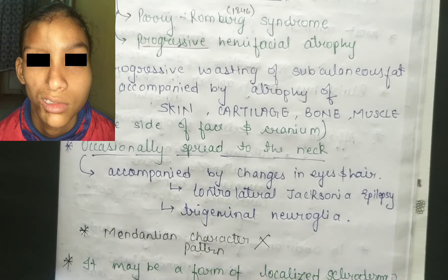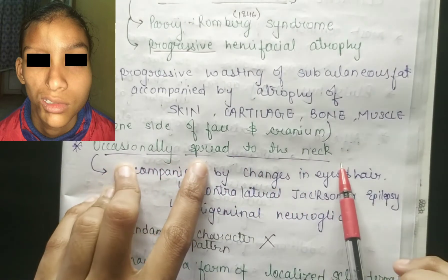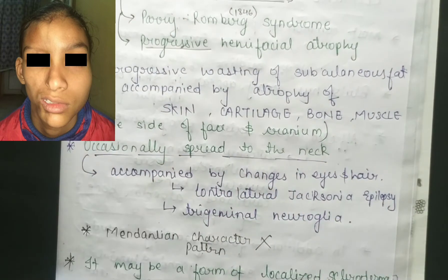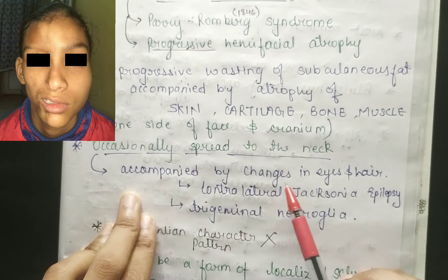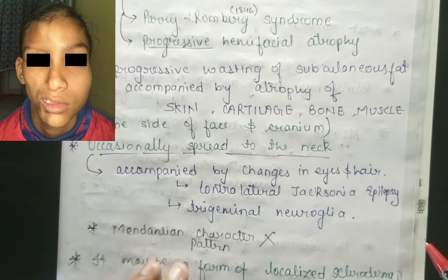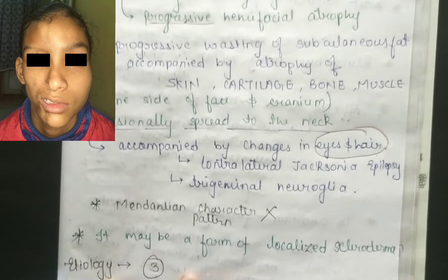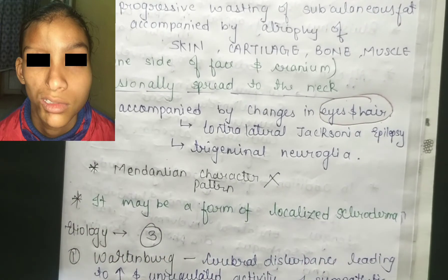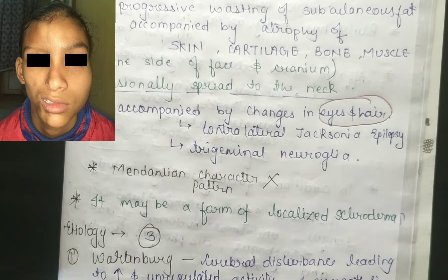It is not exactly the same as facial hemi hypertrophy. In this condition, it occasionally spreads to the neck and is accompanied by changes in the eyes and hair. These features are not seen in facial hemi hypertrophy, so don't get confused.